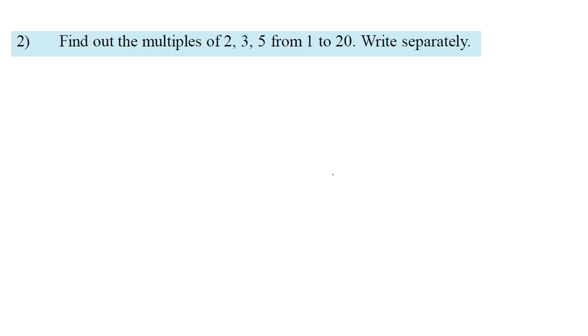The second question was: find out the multiples of 2, 3, and 5 from 1 to 20, and write them separately. So, from 1 to 20 numbers, we find the multiples of 2, the multiples of 3, and the multiples of 5, each written separately.